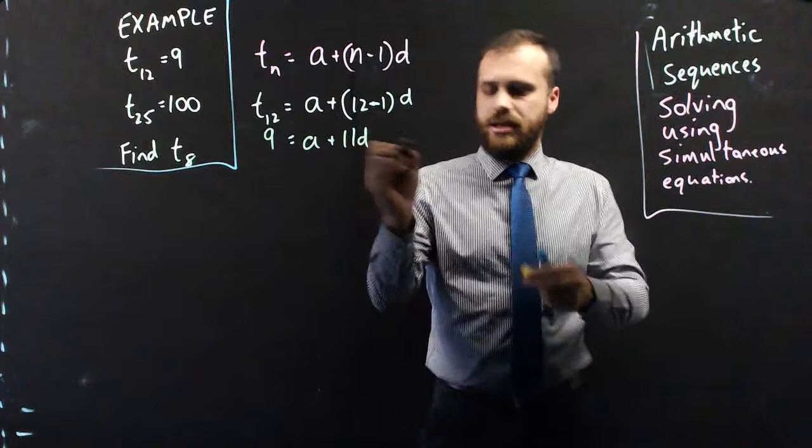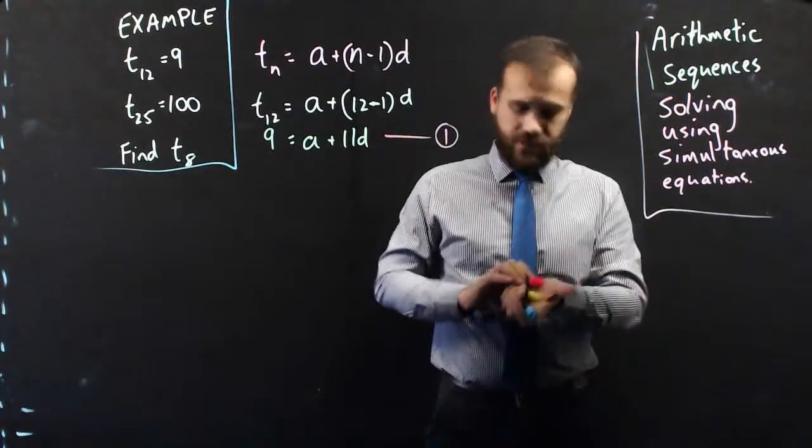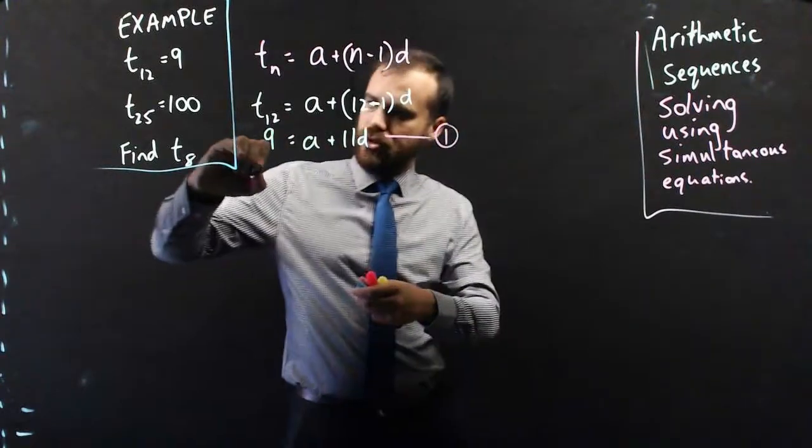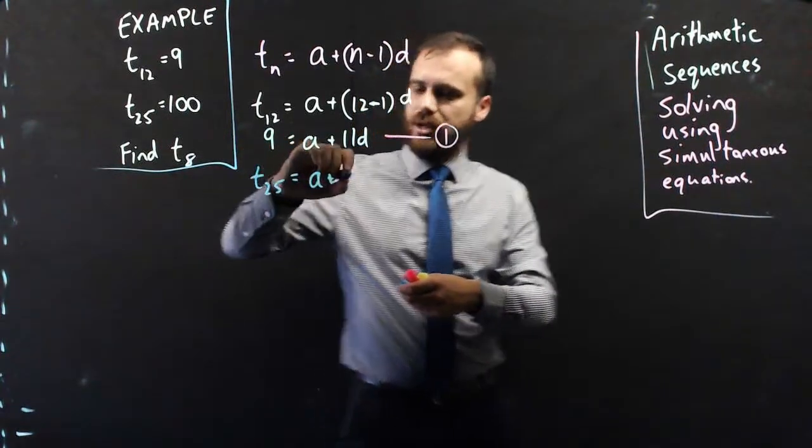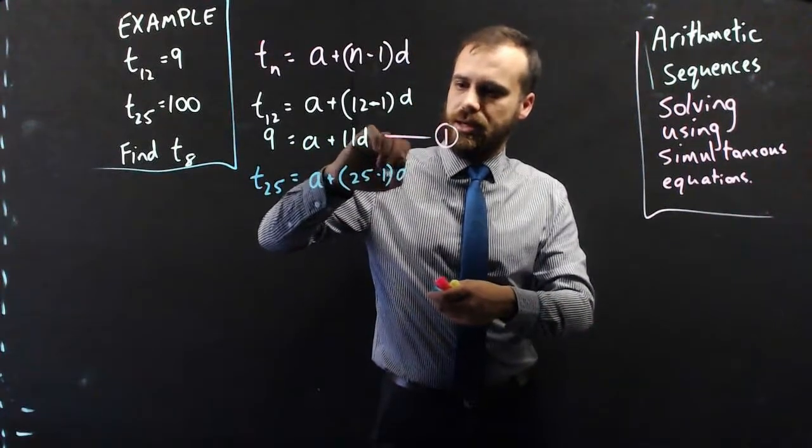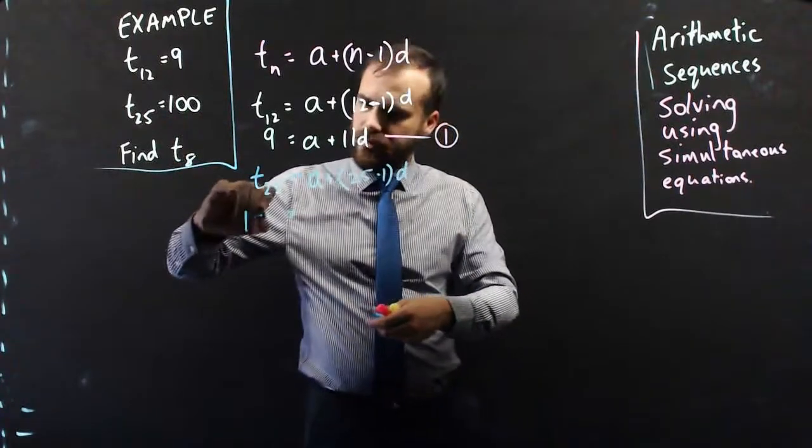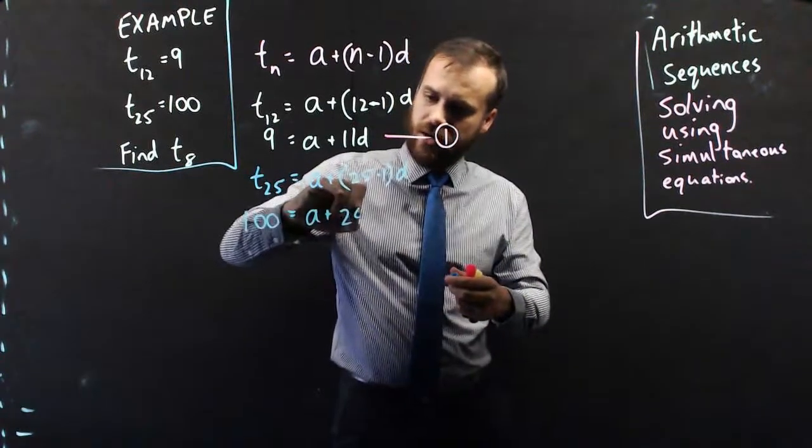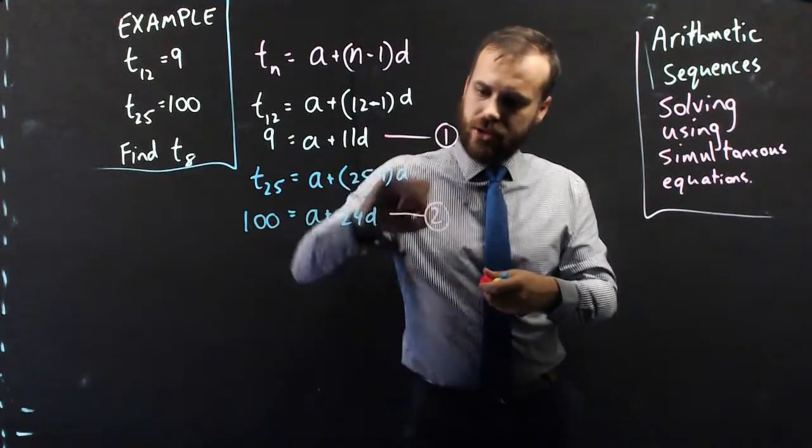So this is, using our simultaneous equation stuff, this is equation 1. But we also know that term 25 is equal to a plus 25 minus 1, d. Now, term 25 is 100, a plus 25 minus 1 is 24, 24d. And now I have equation 2.